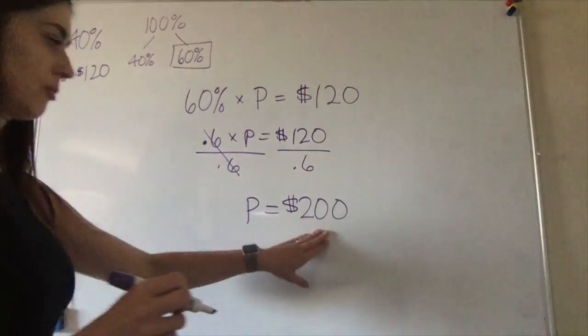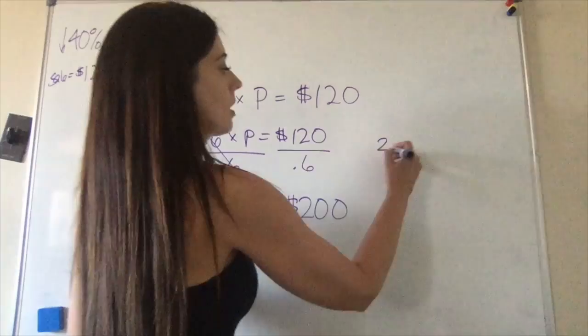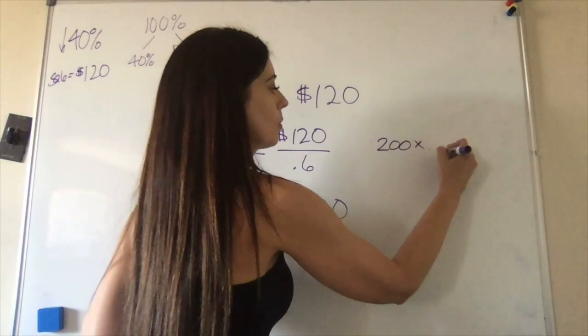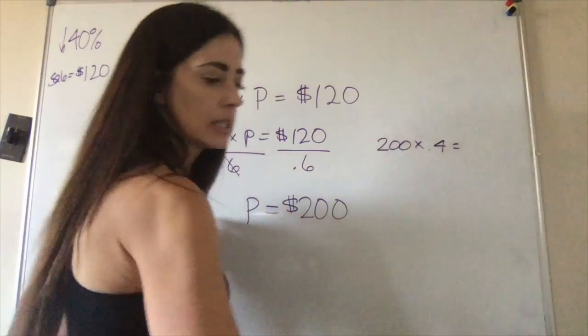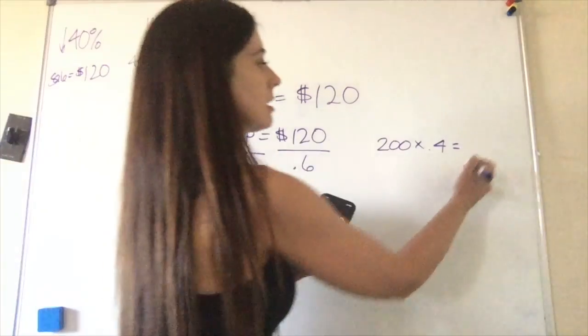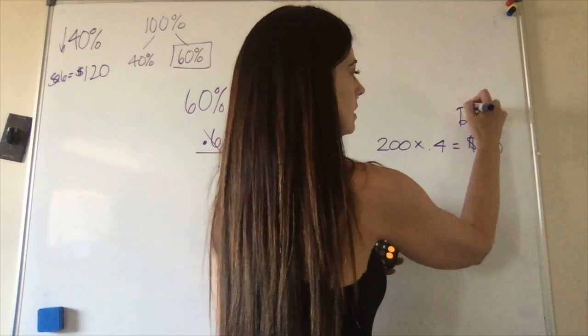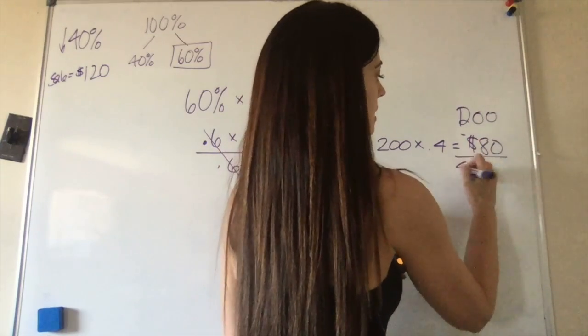So the original price was $200. So let's test that: if we take 40 percent from $200, we could say 200 times 0.4 equals—and 200 times 0.4 equals—that equals $80, which means the discount was $80. $200 minus $80 is $120, so we got the right answer. Good job, guys!